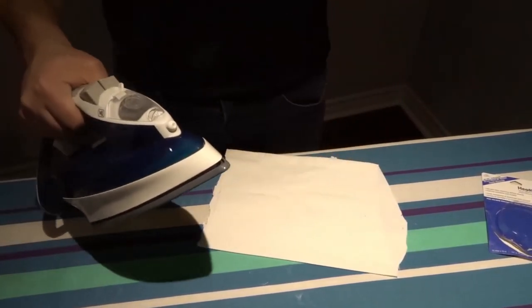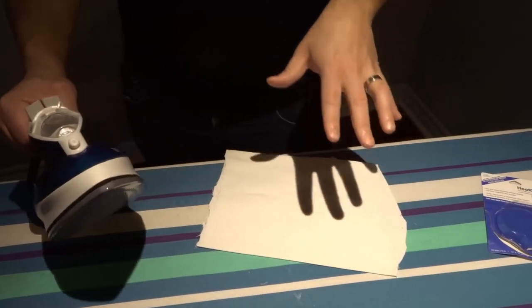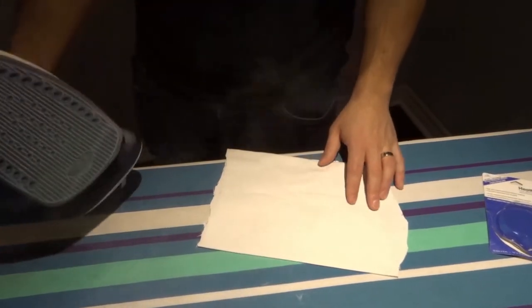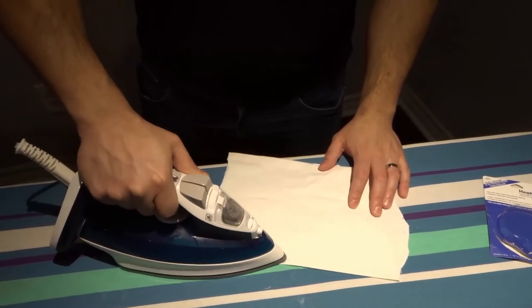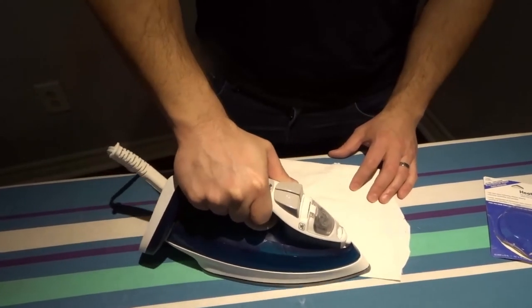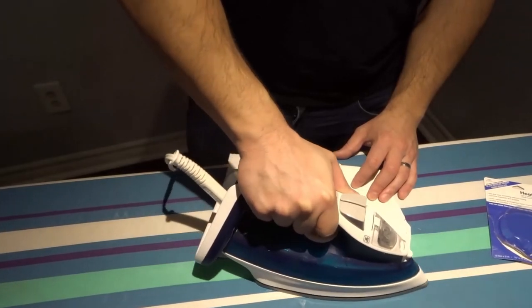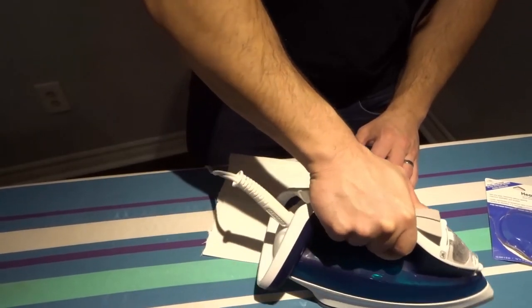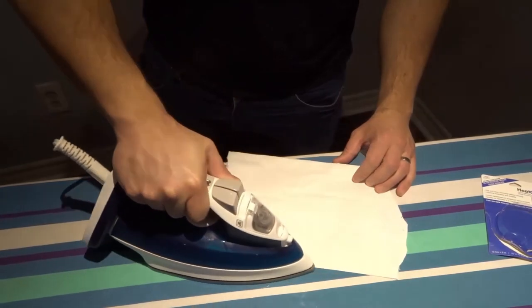And then now what we're going to do is we're going to run the iron over it for about three seconds on either side. So we're going to go ahead and we want to hit each spot for I'd say around three seconds. Obviously it's going to be a little bit more in this situation, but I mean this is all rough.